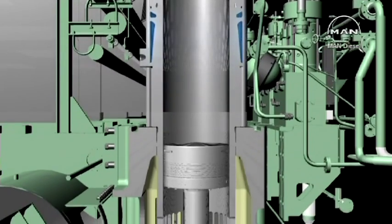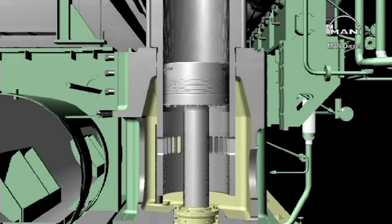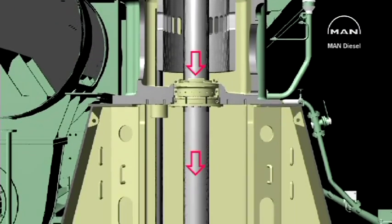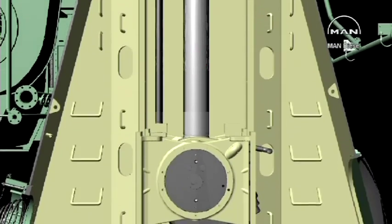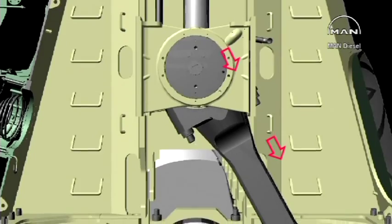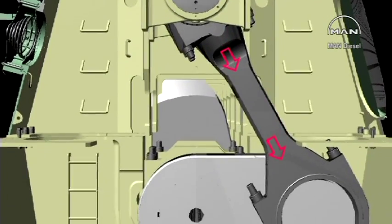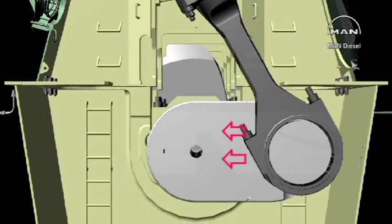The gas pressure acts on the piston, from which the force is transmitted through the piston rod and the crosshead to the connecting rod.